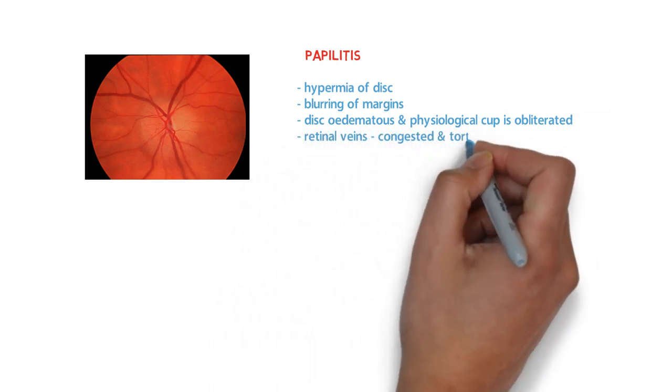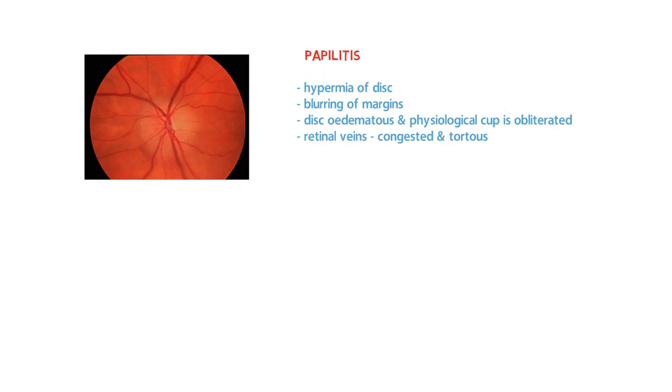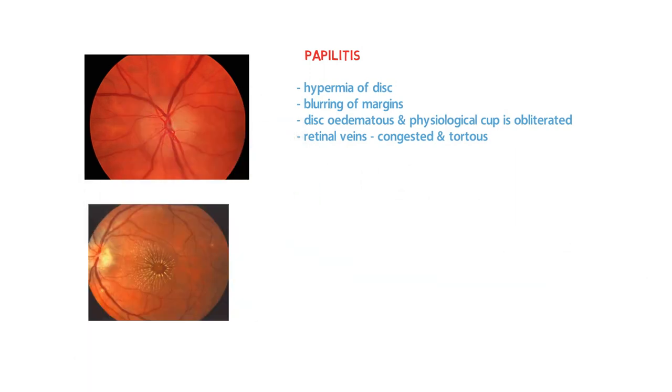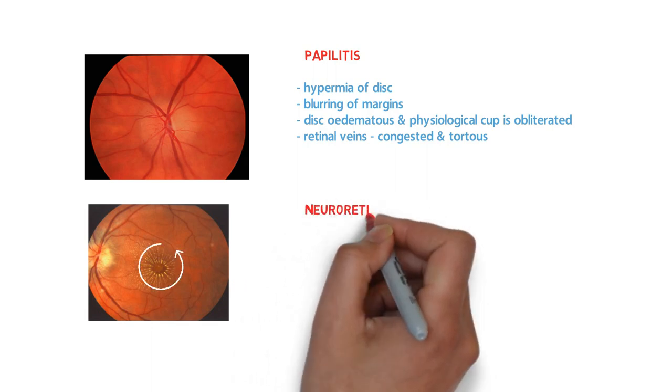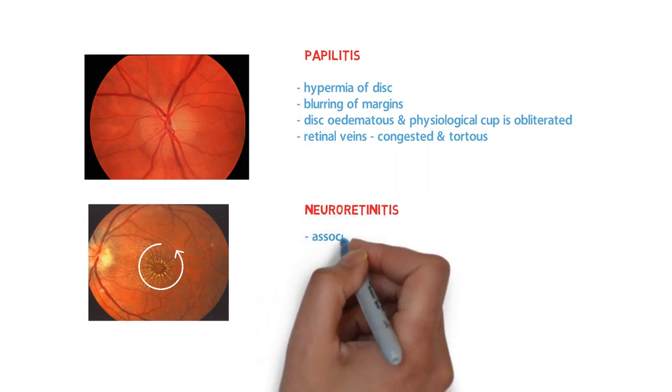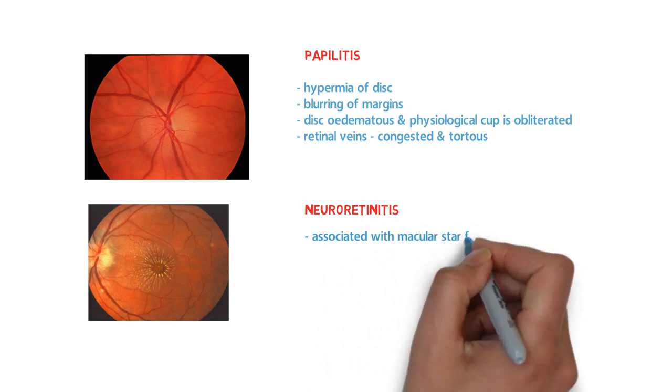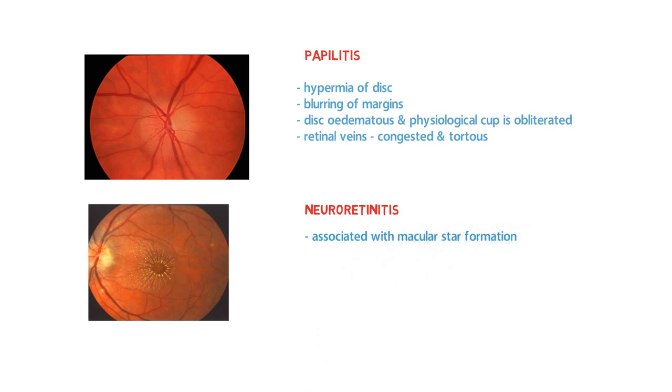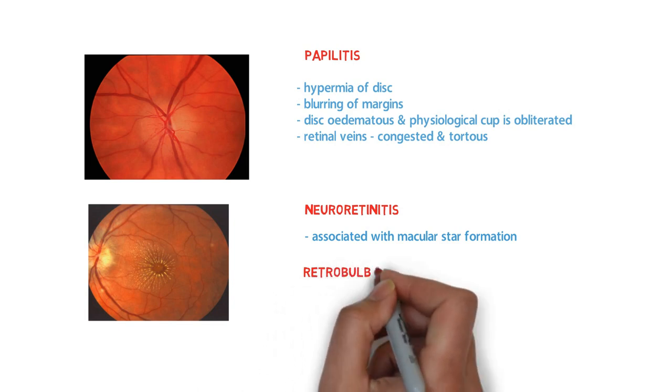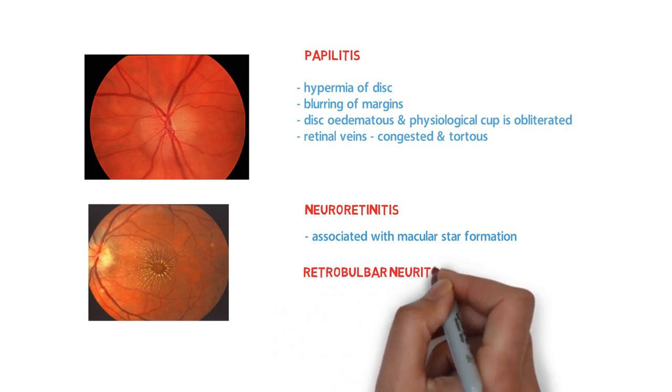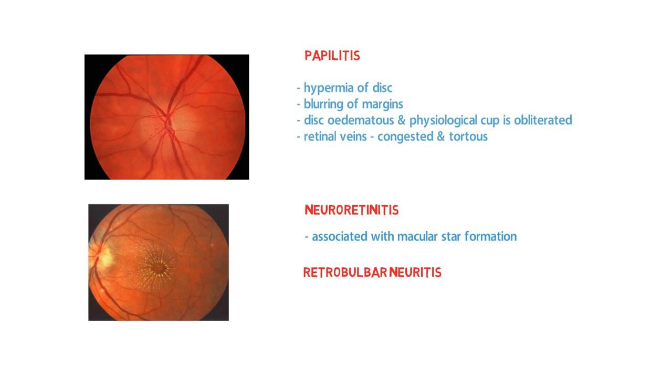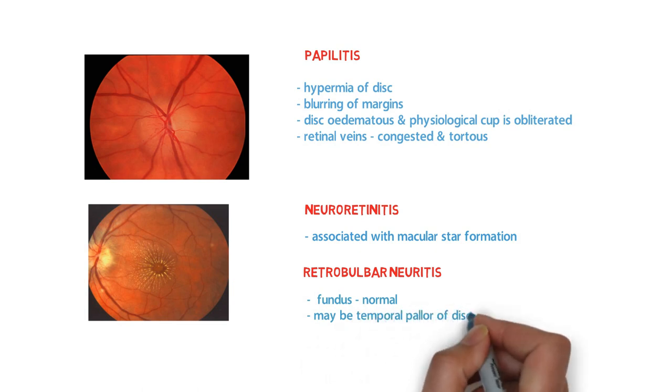Second is neuroretinitis - look over this diagram, there is a macular star map. Neuroretinitis is associated with macular star formation. The third one is retrobulbar neuritis, which affects the optic nerve behind the eyeball. In fundus examination there is normal appearance of the retina and there may be temporal pallor of optic disc.